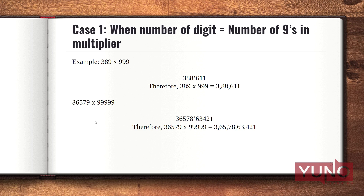Let's see one more example where we have a 5-digit number multiplied with five 9s. 36,579 when multiplied with 99,999: the first step is to subtract 1 from it, giving 36,578 — put a mark to show you have subtracted 1. Now for the remaining part, write the 9s complement of this number. 9s complement of 3 is 6, of 6 is 3, of 5 is 4, of 7 is 2, and of 8 is 1. This is your answer after multiplying 36,579 with 99,999.